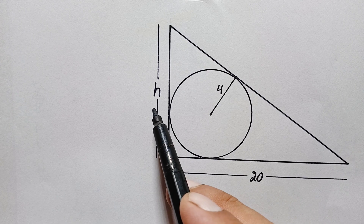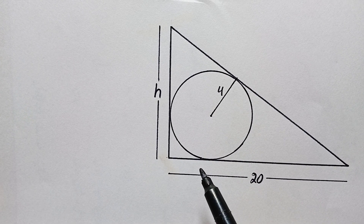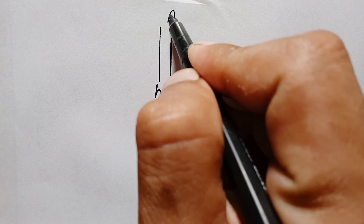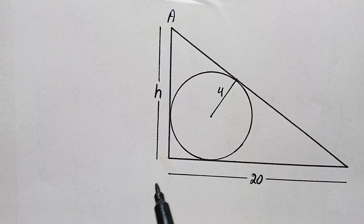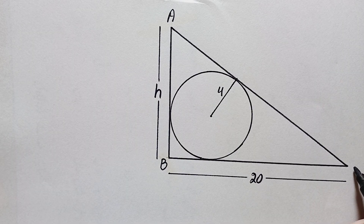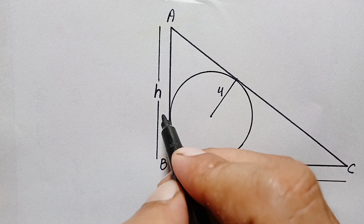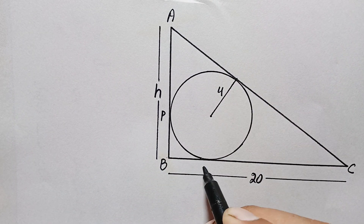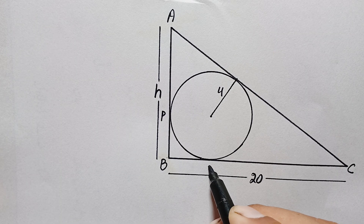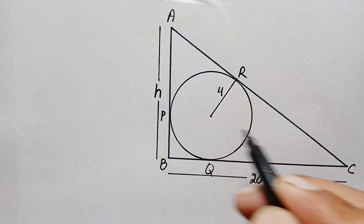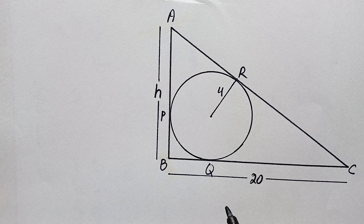So we try to find out the value of h — how can we solve this math problem? First of all, let us suppose this is our triangle ABC. Let us suppose this is point A, this is point B, and this is point C. Let us suppose this is point P, this is point Q, and this is point R, where the circle touches the sides of this triangle.